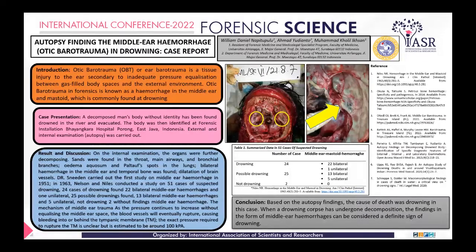In discussion, doctors first conducted a study on middle ear hemorrhage in 1951. Nelson and Nais in 1963 studied 51 cases of suspected drowning. As shown in the table: 24 confirmed drowning cases found 22 bilateral and 1 unilateral middle ear hemorrhage; 25 possible drowning cases found 13 bilateral and 5 unilateral hemorrhage; and 2 non-drowning cases showed no middle ear hemorrhage.